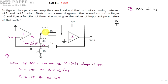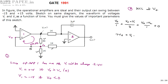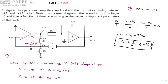The second branch gives (V+ minus V1) divided by 3, and the third branch gives (V+ minus V2) divided by 1, all summing to zero. Collecting all V+ terms on one side gives 7·V+ = V1 + 3·V2. Therefore V+ equals (1/7) times (V1 + 3·V2). This is a very important result.